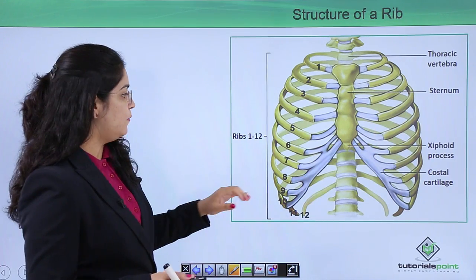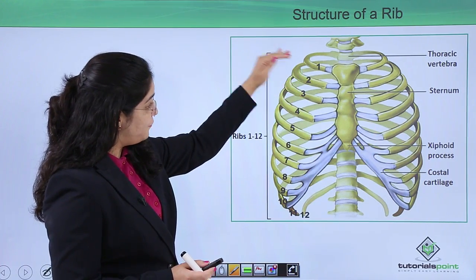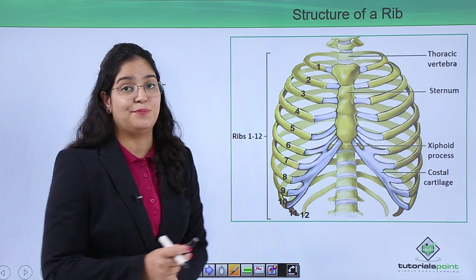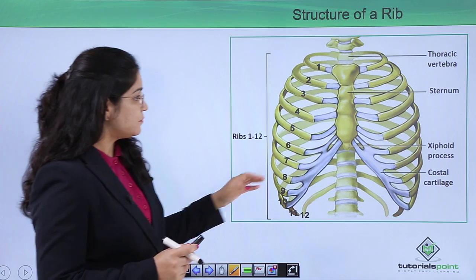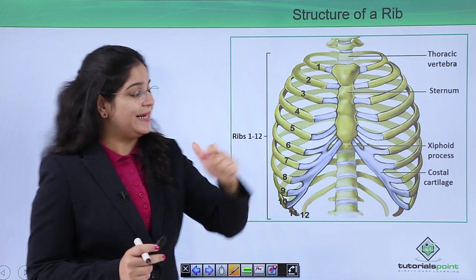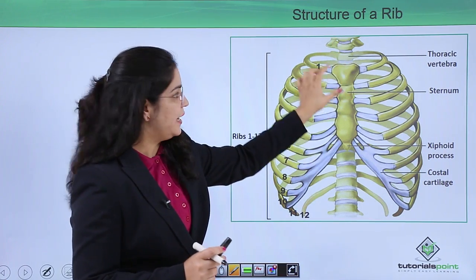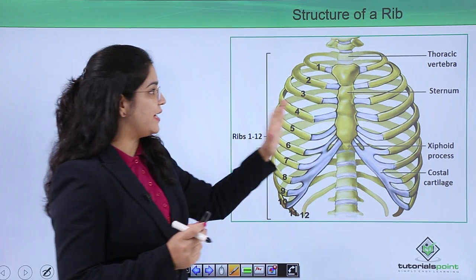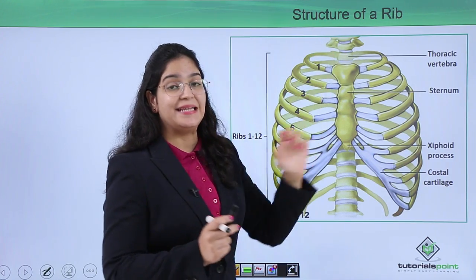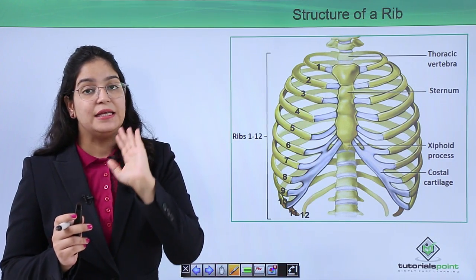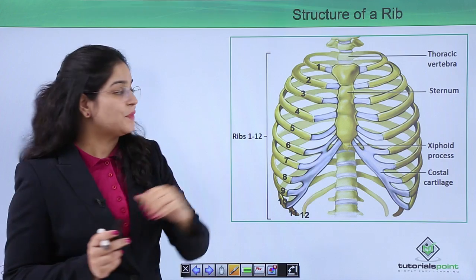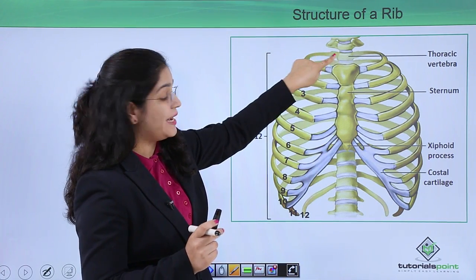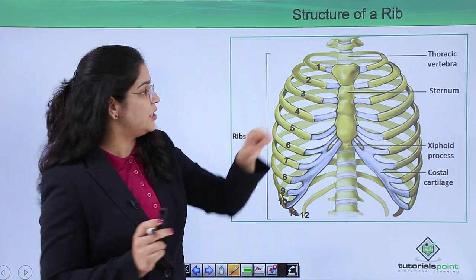We have 12 ribs on each side, numbered one through twelve. At the back side they connect to the vertebra, and at the front they connect to the sternum. On the basis of their connection with the vertebra and sternum, we can divide each rib into two parts. The part connected to the vertebra is called the vertebral portion.